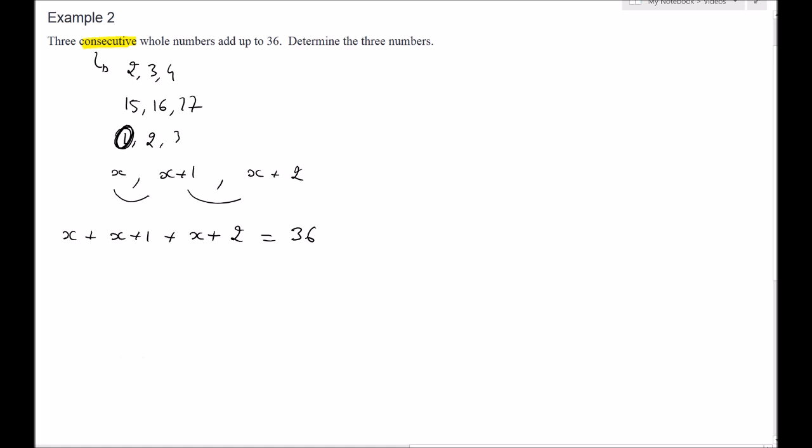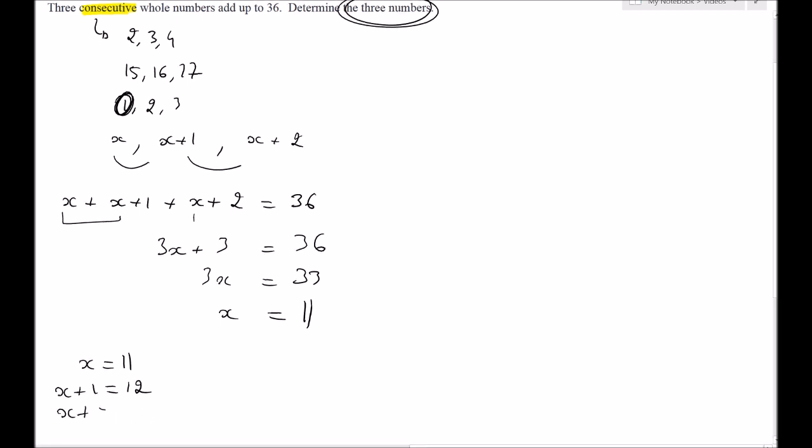I'm going to solve it. X and x and x makes 3x. Three x plus 3 is 36, so 3x should be 33, and x is going to be 11. If x is 11, x plus 1 is 12, x plus 2 is 13. These are our three numbers: 11, 12, and 13.